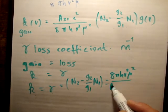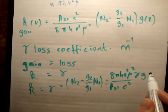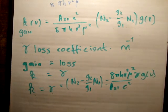...over A21 times C squared gamma G of nu. And that will be your condition for threshold. So that's your threshold gain value.